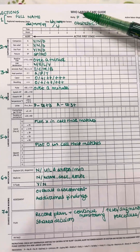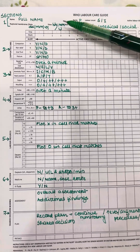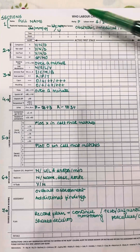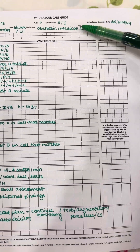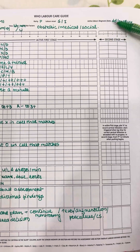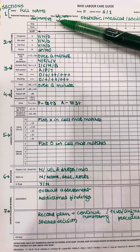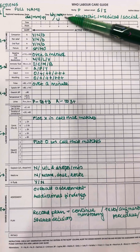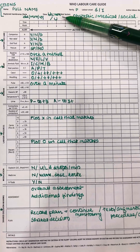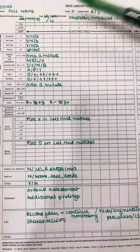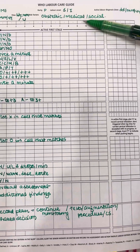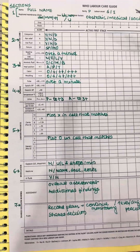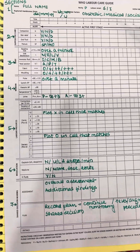In section 1, you give the patient's full name, parity, spontaneous or induced onset of labor, date of labor, date of rupture of membranes — if unknown it is mentioned as 'U' — then any obstetric, medical or social complications, or high-risk factors.